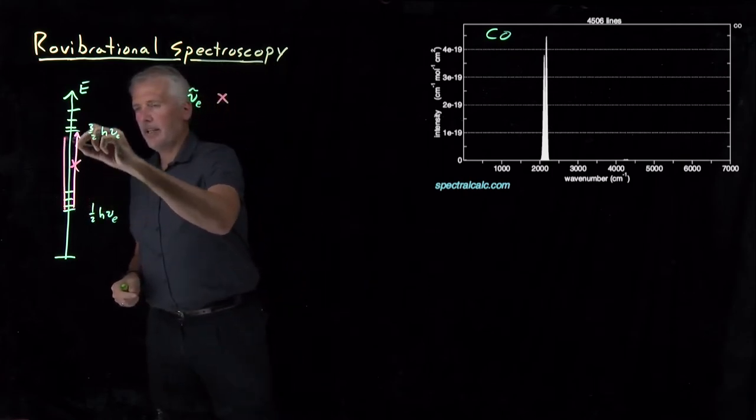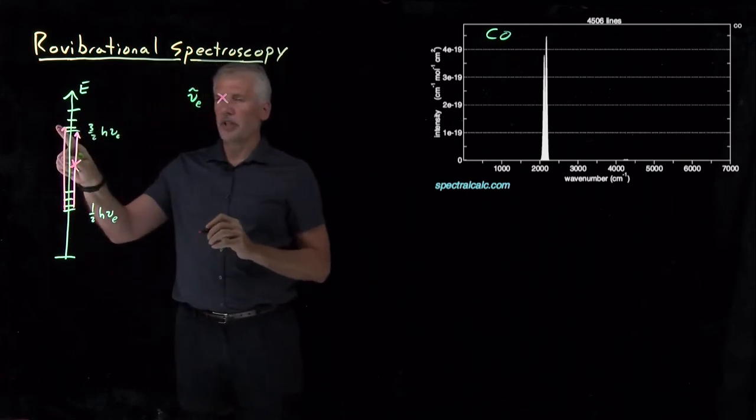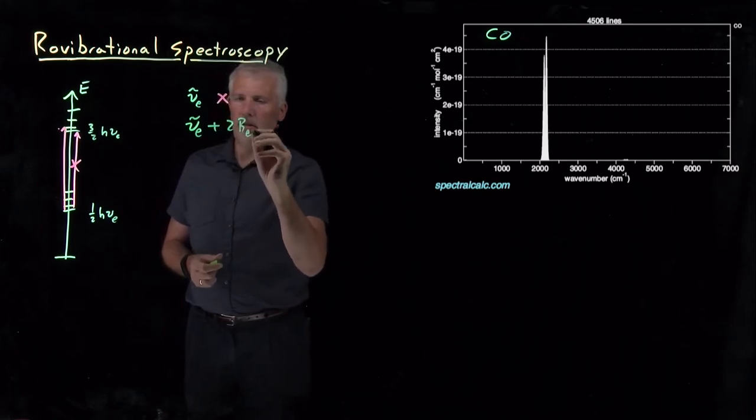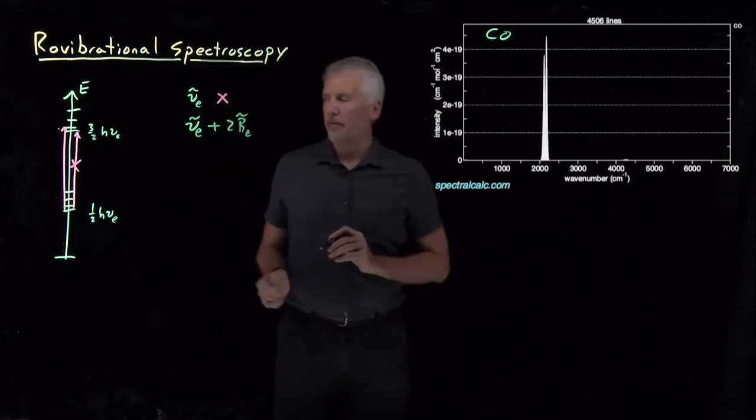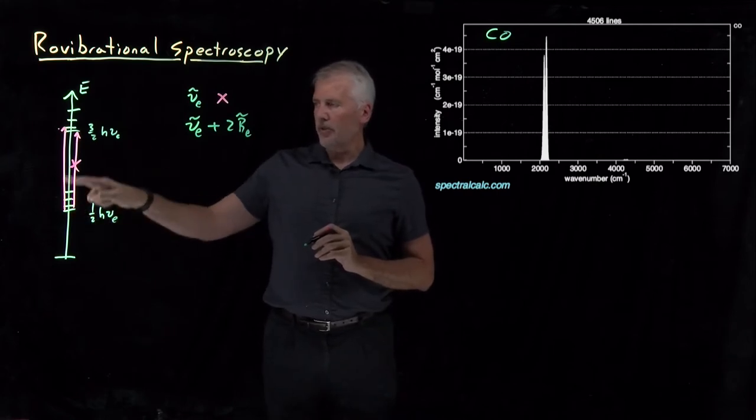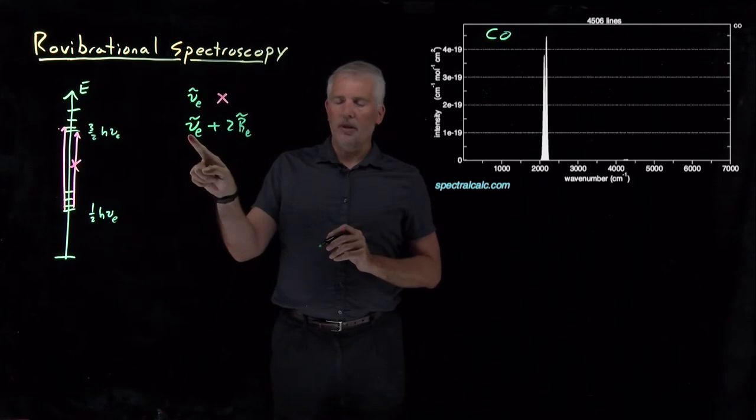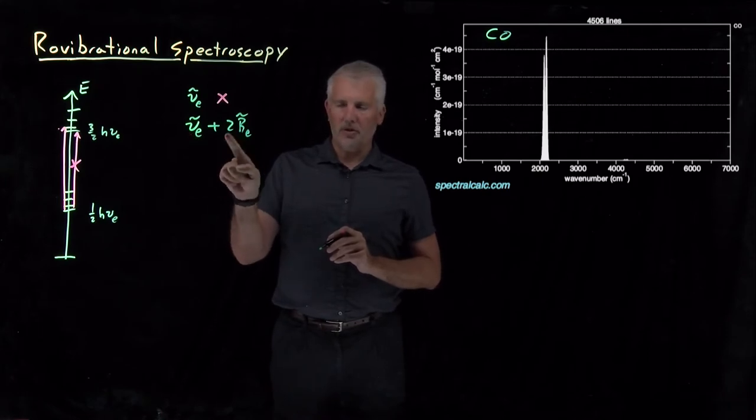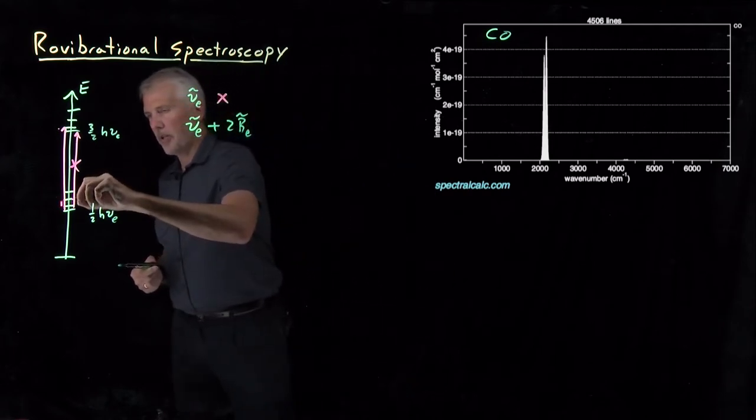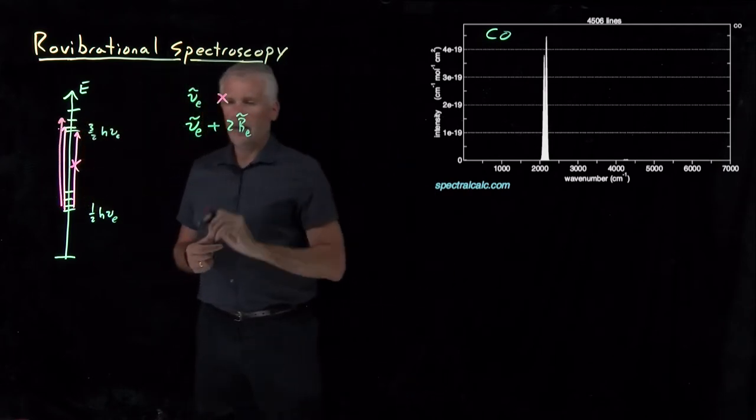If we go from no rotational energy to a little extra rotational energy, gaining one quantum of rotational energy from the L equals zero up to the L equals one state, then we'd absorb fundamental vibrational frequency plus two rotational constants. I've written them here in units of wave numbers. We could also go from the L equals one up to the L equals two.